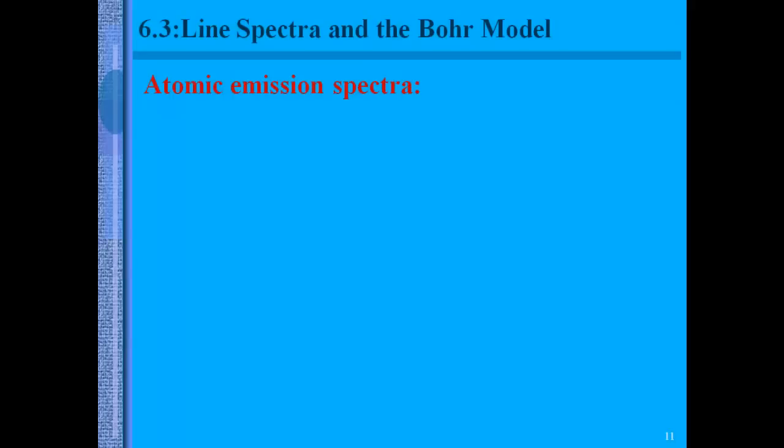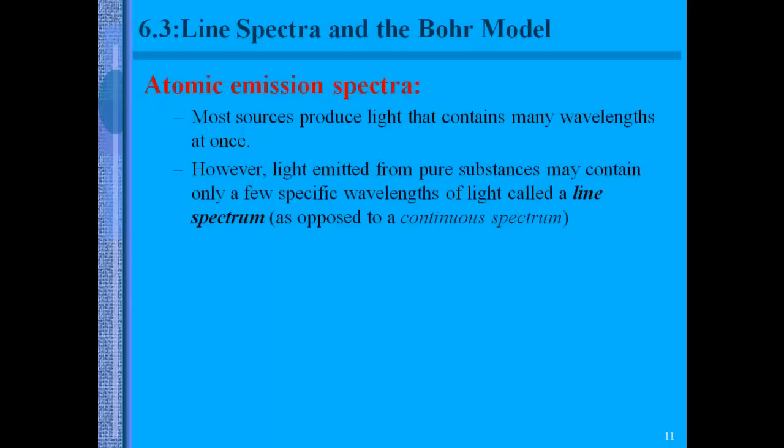Line spectra in the Bohr model, atomic emission spectra. Most sources produce light that contains many wavelengths at once. However, light emitted from pure substances may contain only a few specific wavelengths of light called a line spectrum, as opposed to a continuous spectrum like the rainbow. You get a continuous spectrum from a prism. With these pure substances, they only give off very specific colors.